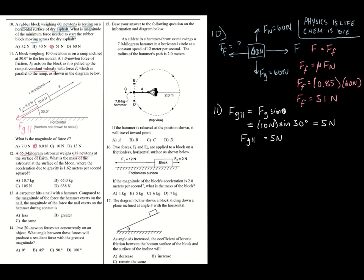Number twelve: a 65-kilogram astronaut weighs 638 newtons on Earth. What is the mass of the astronaut on the Moon, where gravity is 1.62 meters per second squared? Mass doesn't change — it's measured in kilograms. If the astronaut's mass is 65 kg on Earth, it's also 65 kg on the Moon. Weight changes due to gravity, but mass stays the same — choice B.